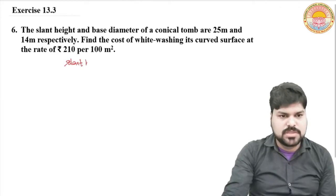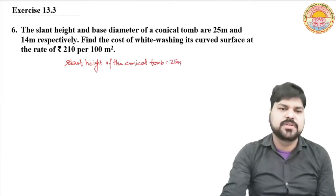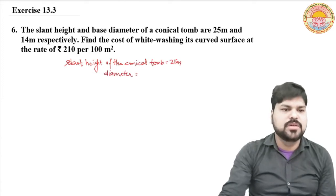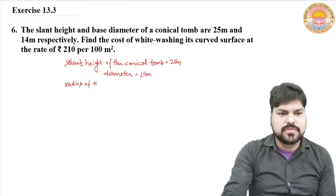हमारे पास क्या है? Slant height of the conical tomb कितनी है? 25 meter. और यहां से इसका diameter दिया गया है। Diameter of the conical tomb 14 meter. Radius of the conical tomb is equal to कितना हो जाएगा?